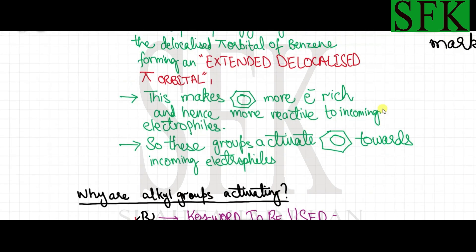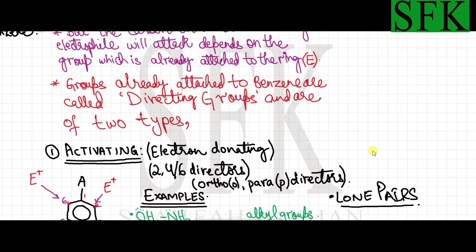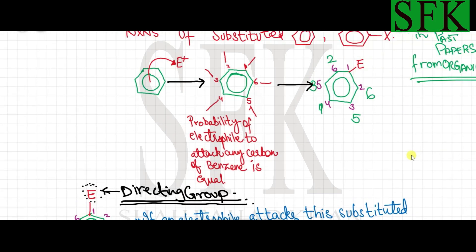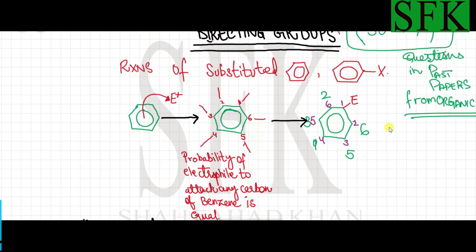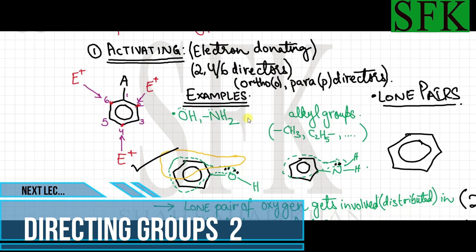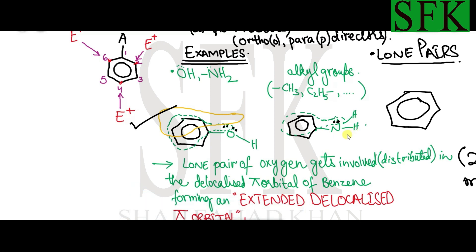We'll talk about the second type of directors — the deactivating groups — in the next video. These actually decrease the reactivity of the benzene ring. To recap: activating groups are 2,4,6-directors, so if an electrophile attacks phenol it will most probably attach to the second or fourth carbon, not the third or fifth. The same applies for the NH2 group.